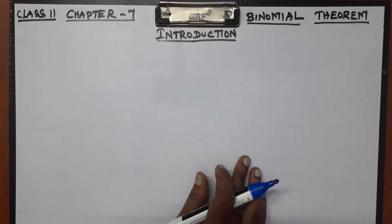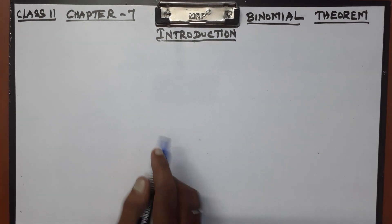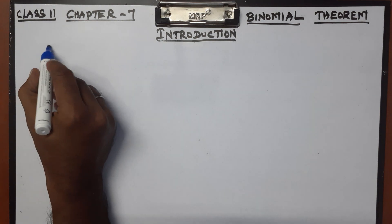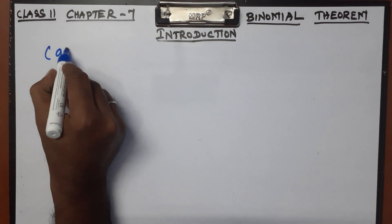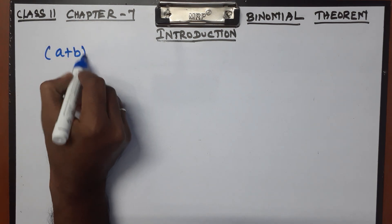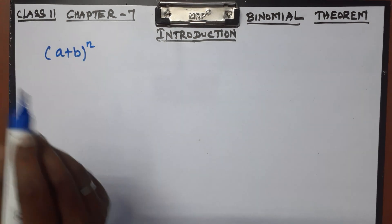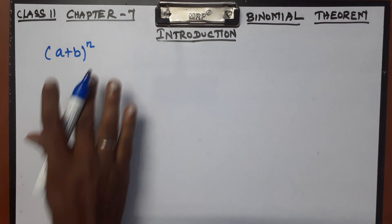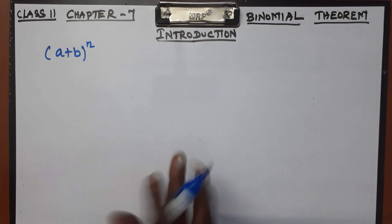There is a formula for this. Now, (a + b) whole power 10 — or in general, (a + b) whole power n, where n is any number. We already know the square term and the cubic term.